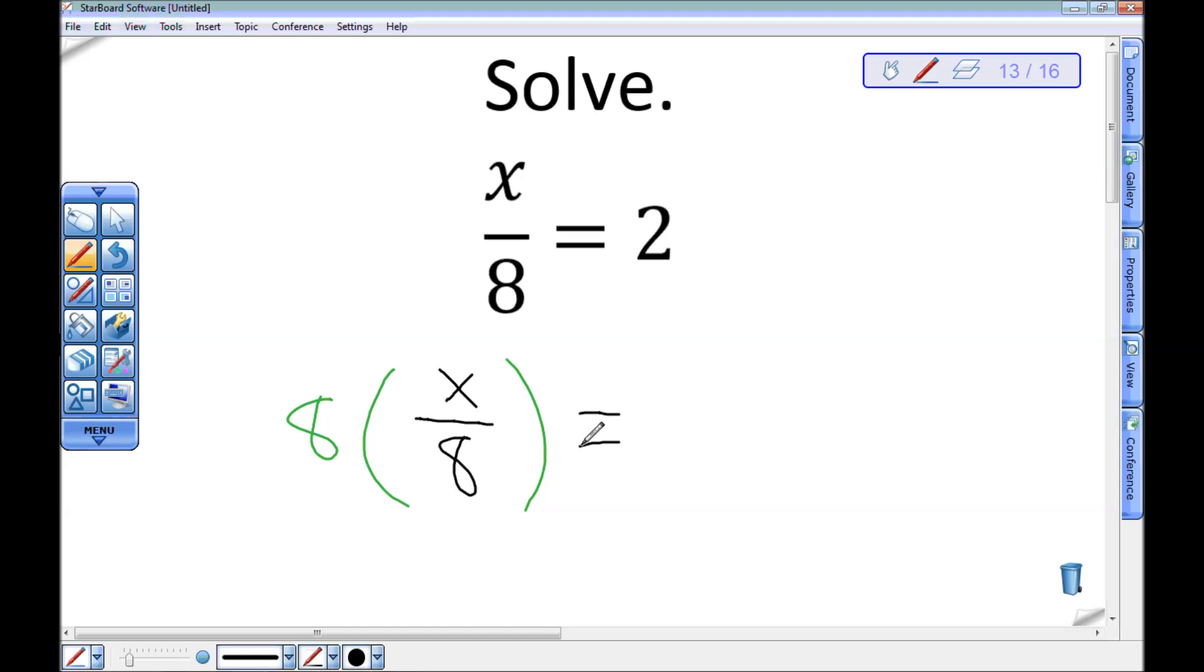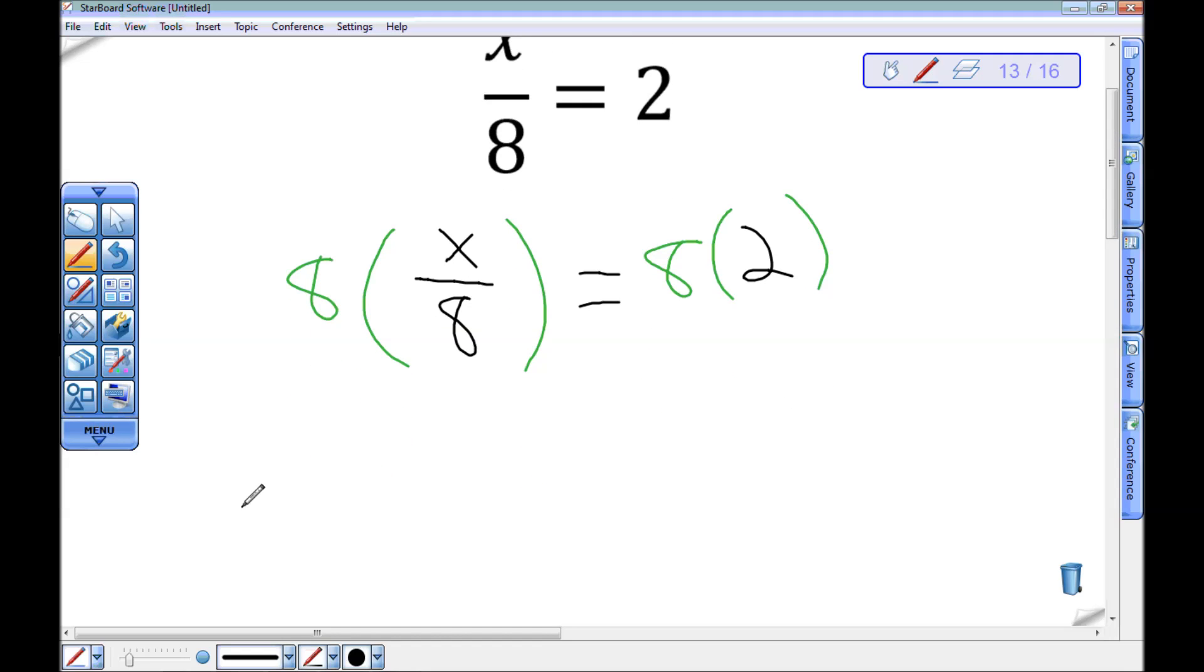If I multiply that by 8, whatever number was there will be left, because if I divide it by 8 and then multiply it by 8, I'll be left where I started. My multiplication property says I have to do that on the other side as well. So I multiply both sides by 8. 8 times x divided by 8 will be x.